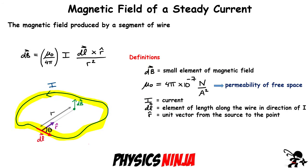We want to look at the magnetic field produced by a steady current. What I mean by steady current is that the current is constant. We have a constant current I flowing in some wire — the wire is highlighted in yellow/blue. I've defined a particular point of observation drawn in green. The little bit of magnetic field at that point is denoted dB, and it's given by the Biot-Savart law.